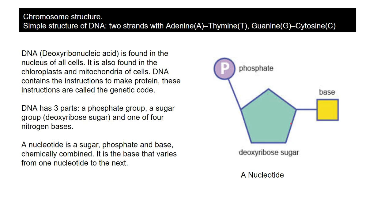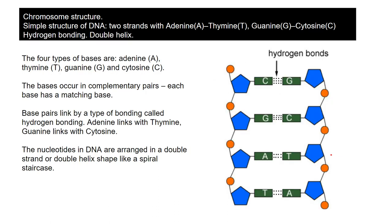What makes one nucleotide different from the next is the base - we can have different bases. Here's an example of the beginnings of a strand: there's a little nucleotide with the sugar, phosphate, and base. And repeating down: sugar, phosphate, base, sugar, phosphate, base.